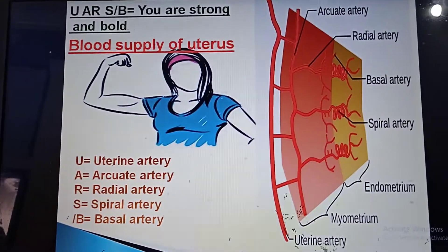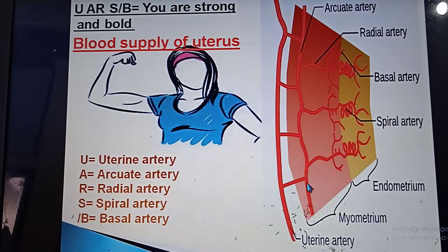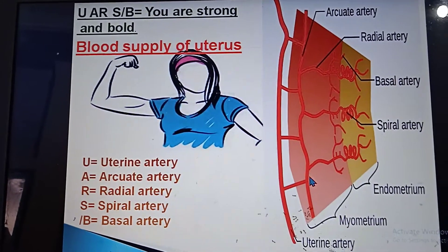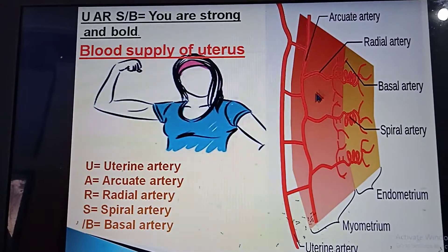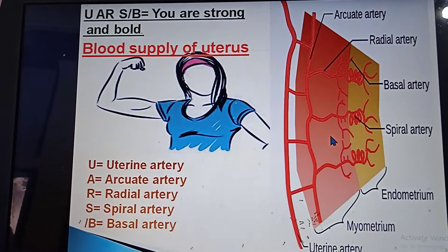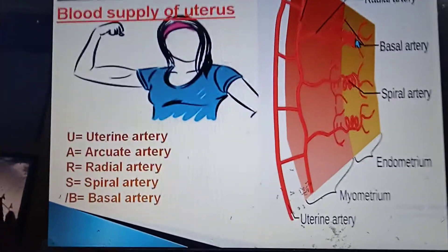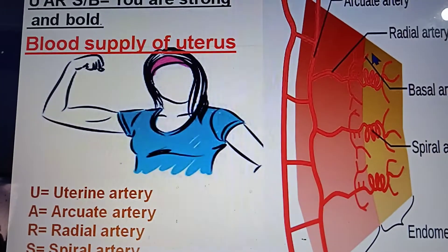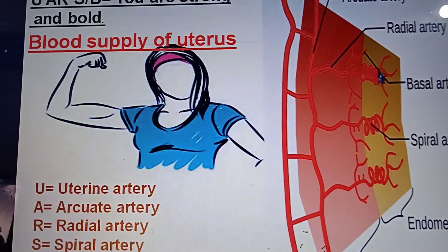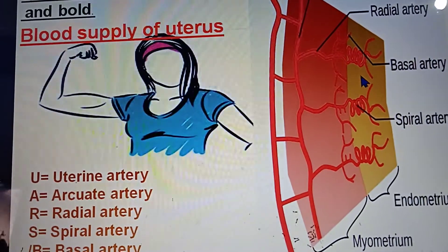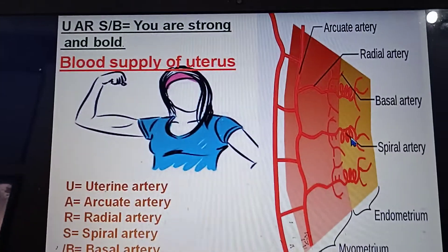Looking at this longitudinal section again: here is the uterine artery, here is the arcuate artery, which gives rise to radial arteries in a radial fashion at different levels. The basal artery restricts itself to the stratum basale, while the spiral artery, in its coiled fashion, goes up to the stratum spongiosum.